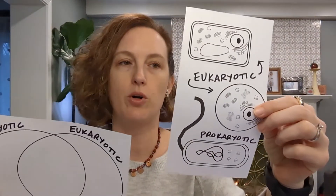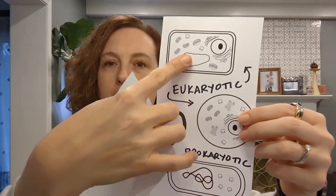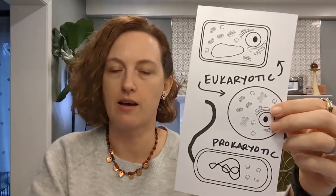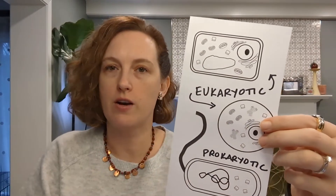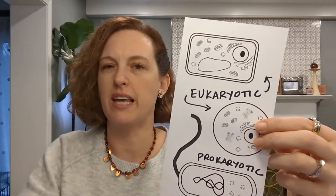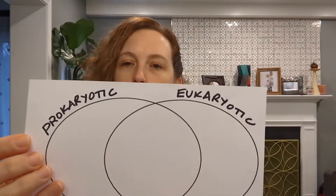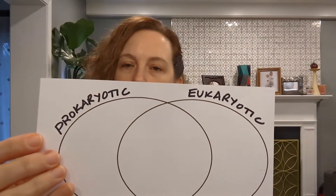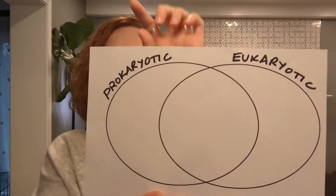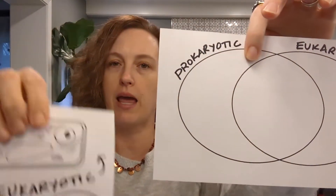To begin we're going to label what's eukaryotic and what's prokaryotic. In the coloring pages we have two eukaryotic cells and one prokaryotic cell. There are more than two kinds of eukaryotic cells but I'm going to focus on the animal cell and the plant cell. On the Venn diagram you also want to label one side prokaryotic and one side eukaryotic, and we're going to go back and forth between the Venn diagram and the coloring.